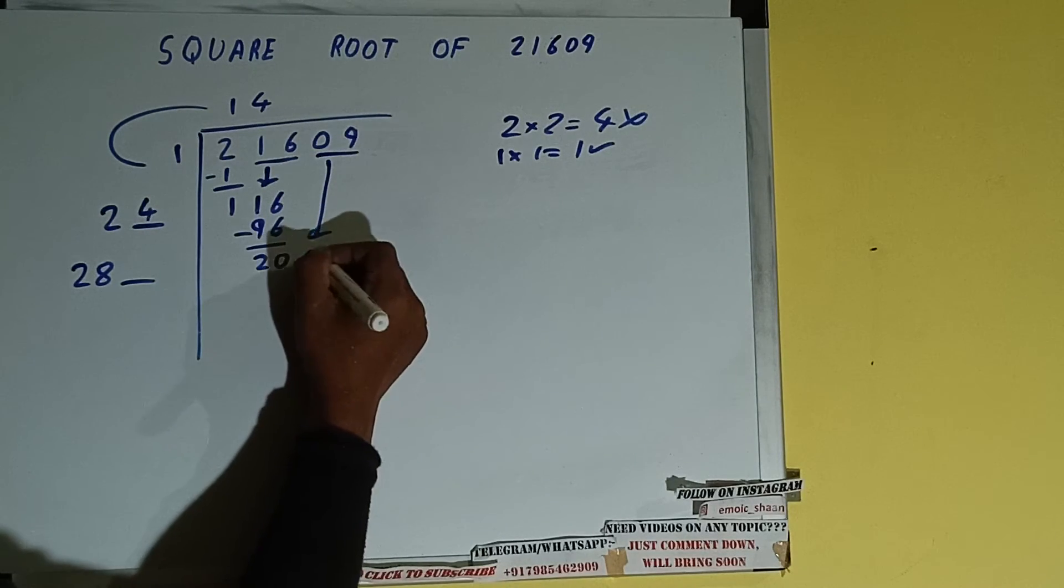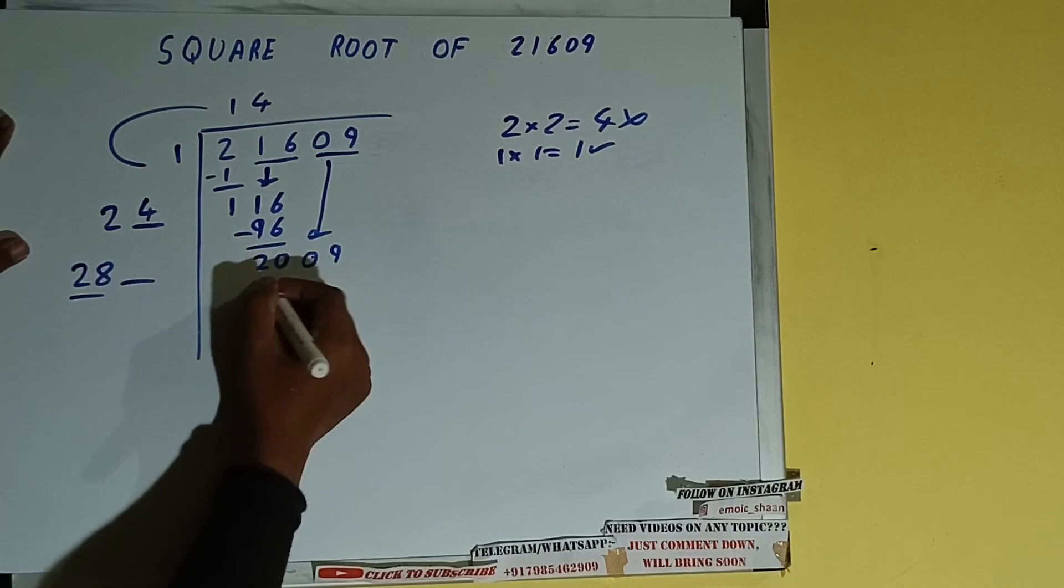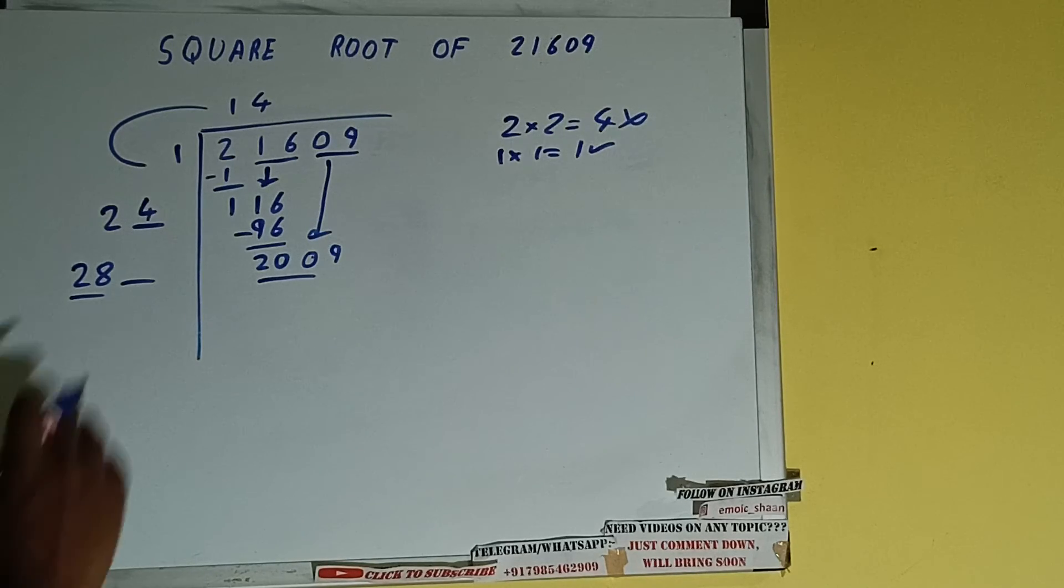Now compare this 28 with this 200. So 28 seven times is 196, so we can try out 7 times.